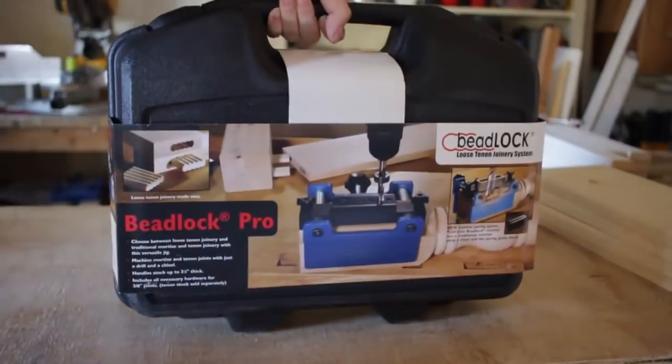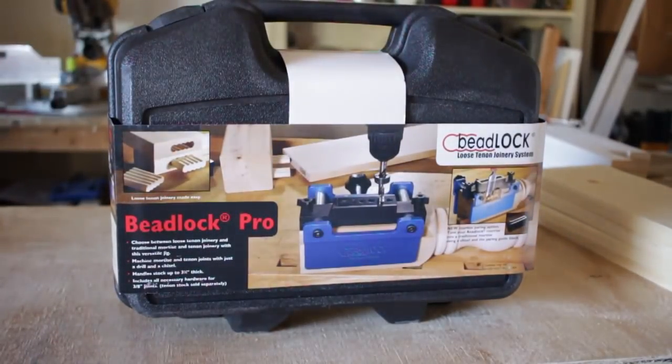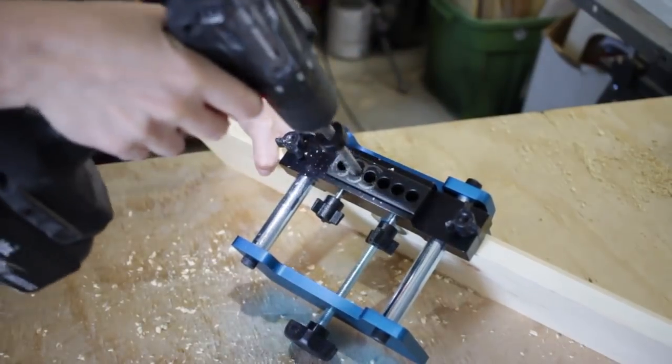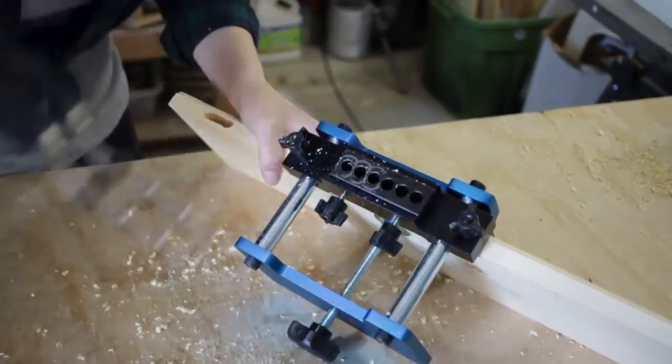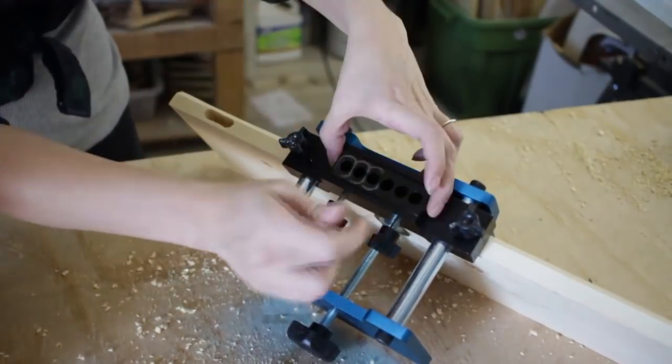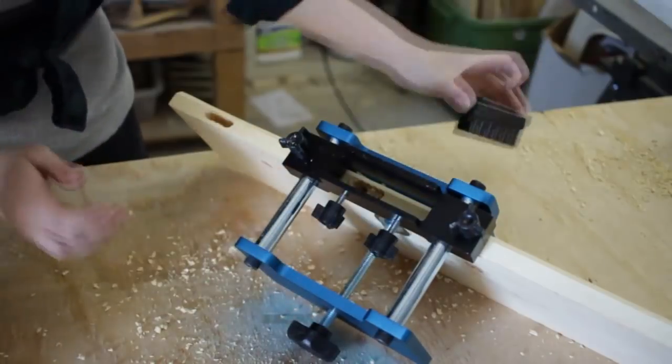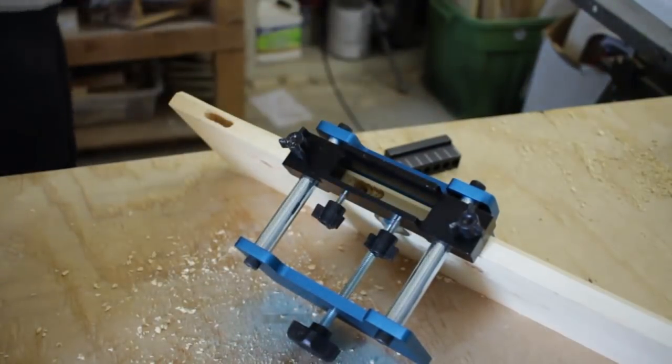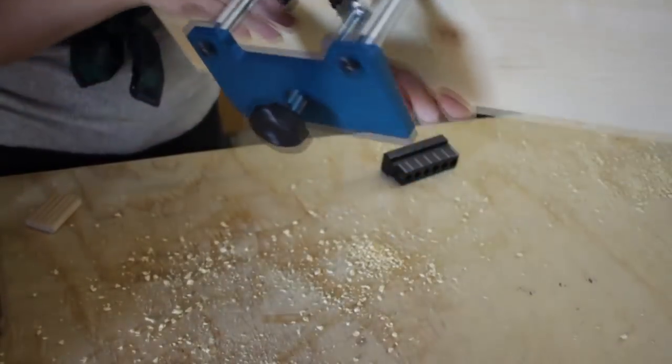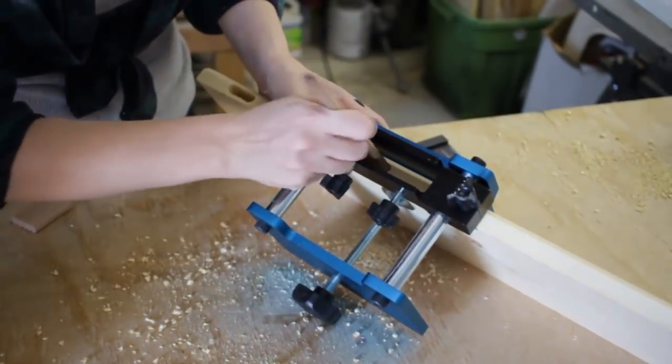I'm wanting to try new joinery techniques. One of the things that's been really interesting to me is the idea of floating tenons. I recently was sent a Beadlock Pro to try and I thought this would be a good project to experiment on. It's pretty simple. You use a jig and a drill to create a unique shaped mortise on both sides of the boards that you want to join.